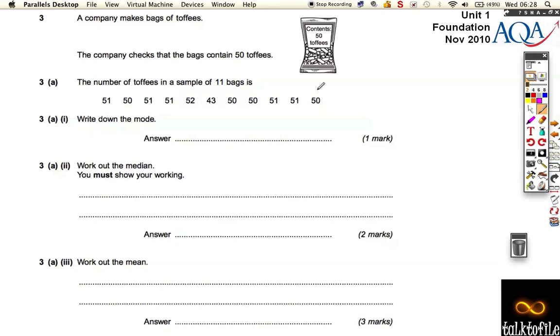So we want to write down the mode. We can do that either by spotting it. If we count, 51 comes up 1, 2, 3, 4, 5 times and 50 only comes up 4 times. It comes up more than the other numbers, so the mode must be 51, it's the one that comes up the most.